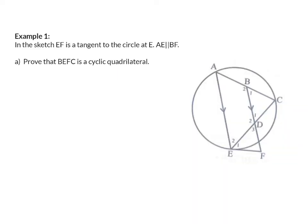Let's have a look at example one. In the sketch, EF is a tangent to the circle at E, and AE is parallel to BF. We are asked to prove that BEFC is a cyclic quadrilateral. Since EF is a tangent to the circle, E1 is the same size as A because of the tangent chord theorem. Also, since AE is parallel to BF, A is the same size as B1 because of corresponding angles with the parallel lines. This means E1 is the same size as B1.